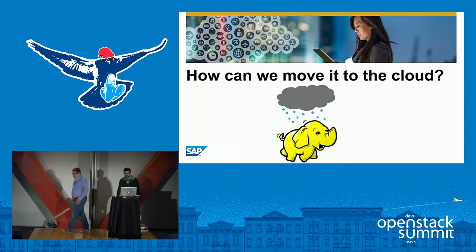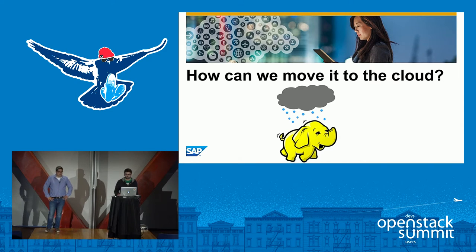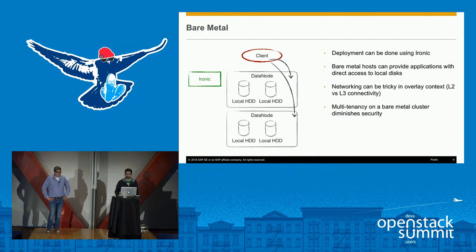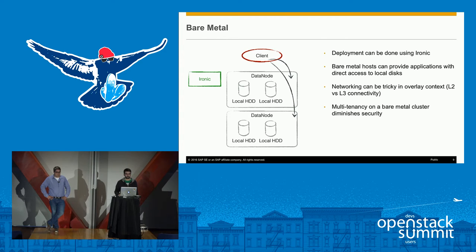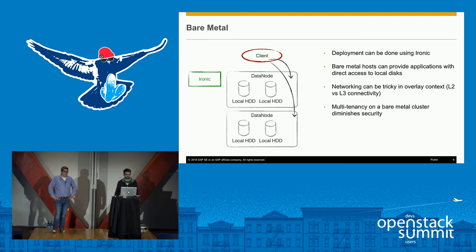Thanks, Mark. When you want to move a big data Hadoop cluster workload into the cloud, there are several deployment possibilities. The first we want to look at is bare-metal deployment using Ironic. Such a solution most closely resembles a classic Hadoop cluster where you deploy your stuff on bare-metal servers. You have the advantage of direct access to the hardware and the disks, so you basically have the same performance as with a classic cluster.